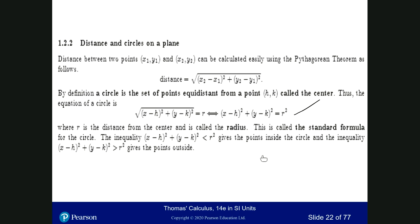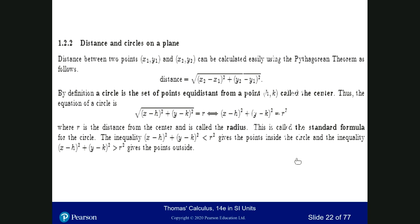A circle is the set of points equidistant from a point (h, k), which is called the center. Equidistant means that from (h, k), all points have the same distance r. So (x minus h) squared plus (y minus k) squared equals r squared is the equation of the circle. This is the standard formula for a circle with center at (h, k) and radius r.